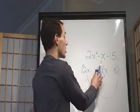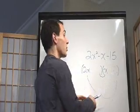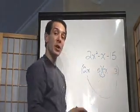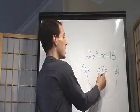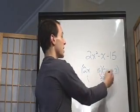If 3 and 5 don't work, the first thing you need to do is switch them around. So make it a 5 and a 3. We'll try it again. 5 times x, 2x times 3.